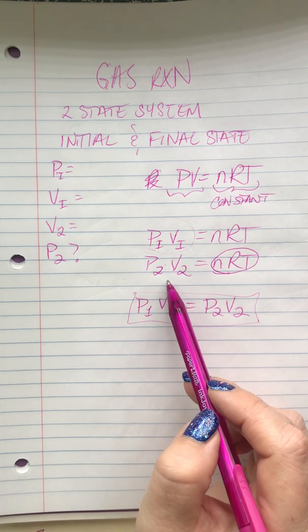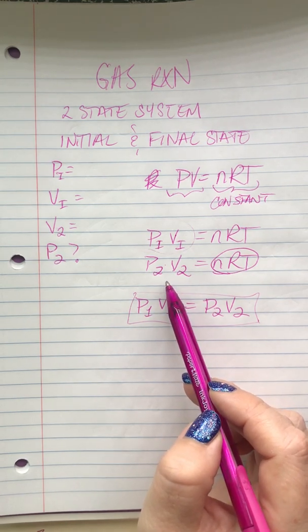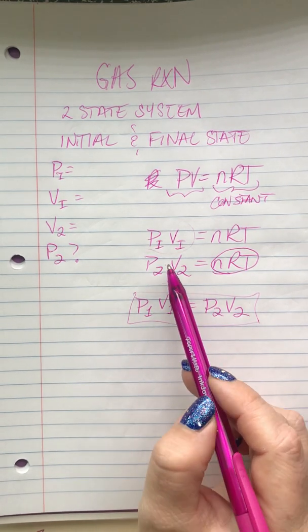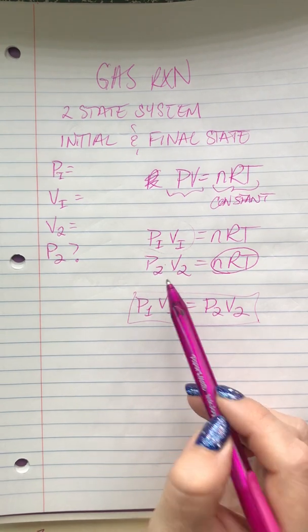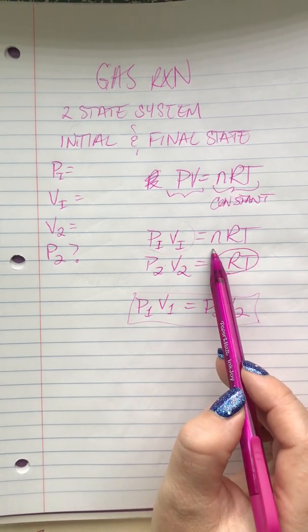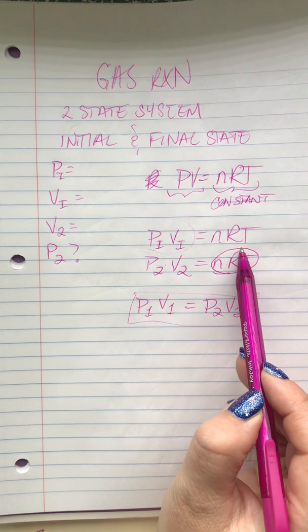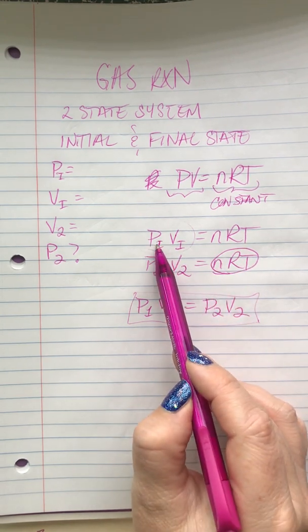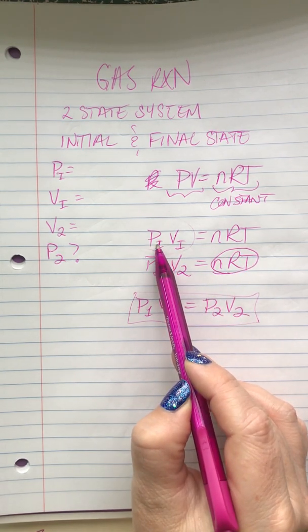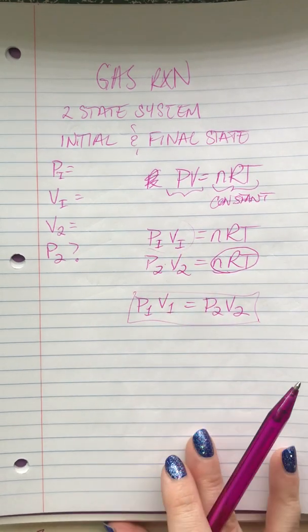And if you know that you have a two-state system, all you need to do to figure out the relationship between those two states is get all of the things that are not changing on one side and all of the things that are changing on the other side.